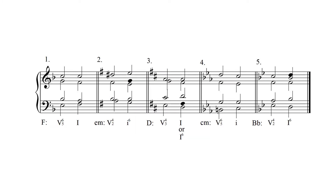In example number one, in the key of F major, you were given a first inversion dominant seventh chord. Following the voice leading steps provided in the earlier video, you would resolve the chordal seventh first, which would be the B flat in the tenor voice, moving down by step to A.